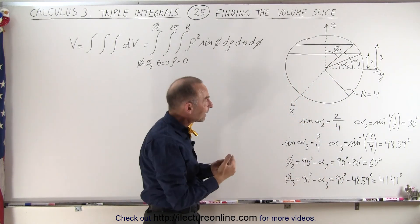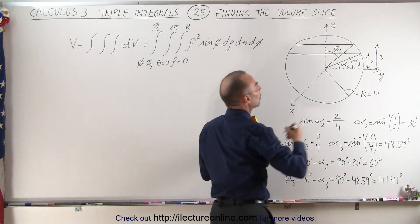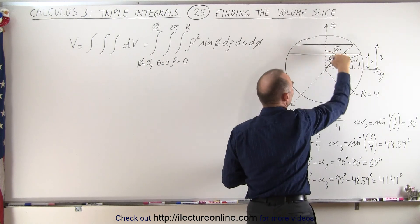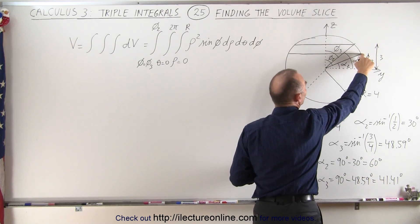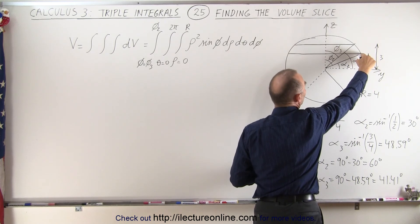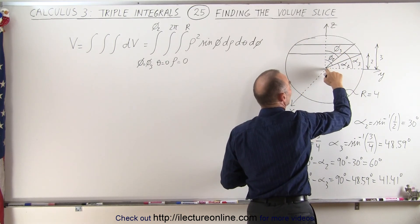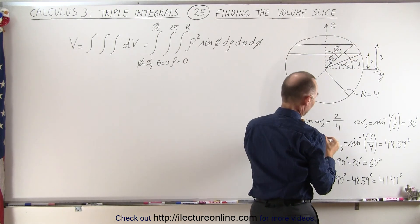In order to calculate that volume we need to know some reference angles. We need to know phi sub 2, the angle from the z-axis down to that line that connects the center to the edge of the circle where the bottom of the slice is, and the angle phi 3 which connects the line from the center to the edge of the circle where the top of the slice is.